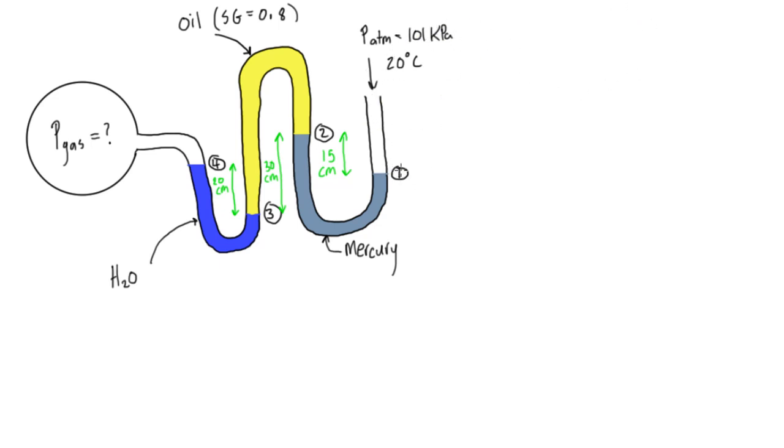So first of all, that means we're going to find out what's P1. First of all, P1 is equal to P atmosphere, right? This air is just pushing down like that. And so this is equal to 101 kPa kilopascals or 101,000 pascals.